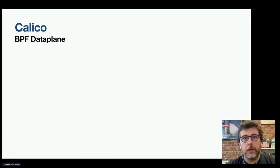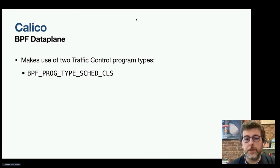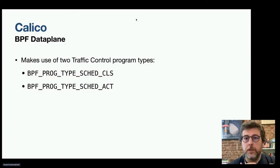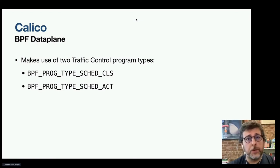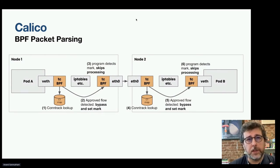The Calico BPF data plane makes use of BPF programs of the traffic controller type. The first is BPF_PROG_TYPE_SCHED_CLS and the second is BPF_PROG_TYPE_SCHED_ACT. These programs attach at both the node ingress and egress point of the Linux networking stack, just before packets get to IP tables. Because Calico accesses packets early in their lifecycle, it can handle them through a fast path that bypasses much of the networking stack, resulting in significant performance benefits.